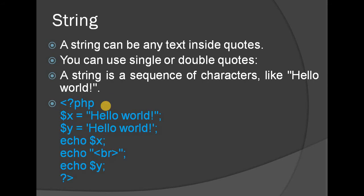Next is string. A string consists of characters and text. It can be any text inside quotes — single quotes or double quotes. A string is a sequence of characters, like 'Hello World'. For example, $x = "Hello World".